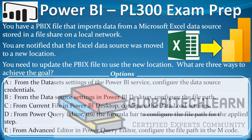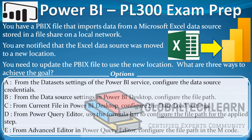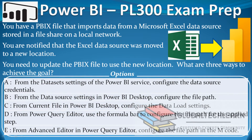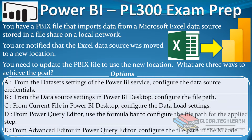Hello friends, welcome to Global TechLearn. In this video we will practice various ways to configure source file path for Excel in Power BI. The question is: you have a PBX file that imports data from a Microsoft Excel data source stored on a file share on a local network. You are notified that the Excel data source was moved to a new location. You need to update the PBX file to use the new location. What are three ways to achieve the goal?